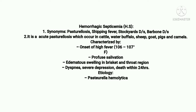It is characterized by onset of high fever of 106 to 107 degrees Fahrenheit, profuse salivation, and edematous swelling in the brisket and throat region. The causative agents are Pasteurella multocida and Pasteurella hemolytica — gram-negative, short bacilli, aerobic, bipolar organisms. The organism may be present in the respiratory tract of susceptible animals.